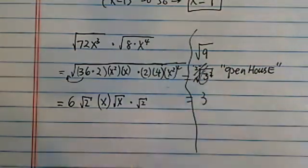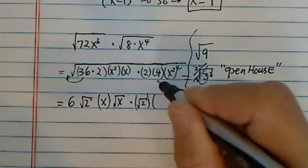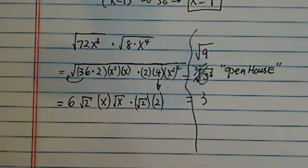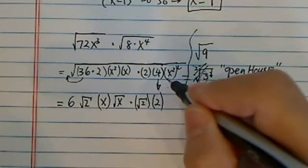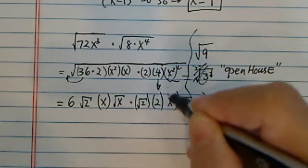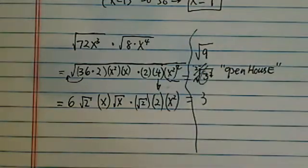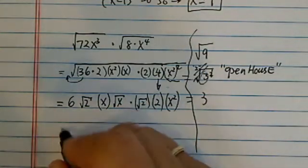Next term, radical 2 has nowhere to go. Next term gets to be a 2 because it's a perfect square. Next term here gets to be X squared because this square gets canceled out. Now let's clean it up a little bit.